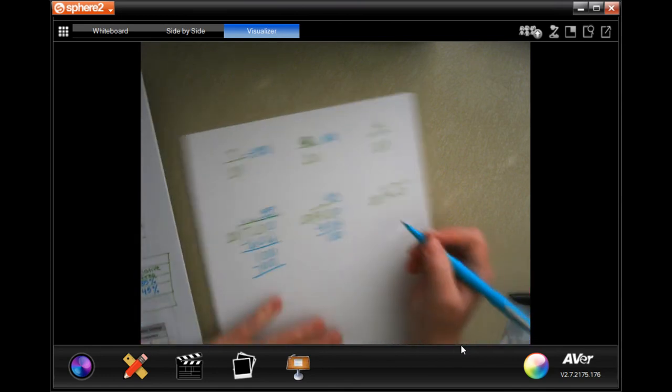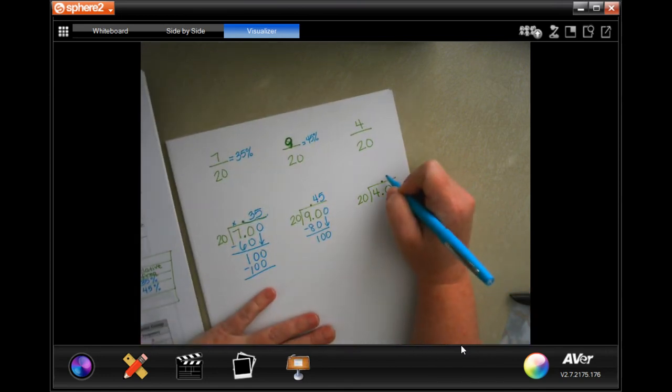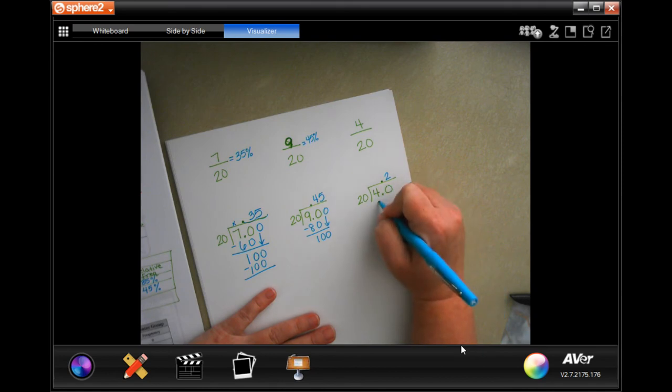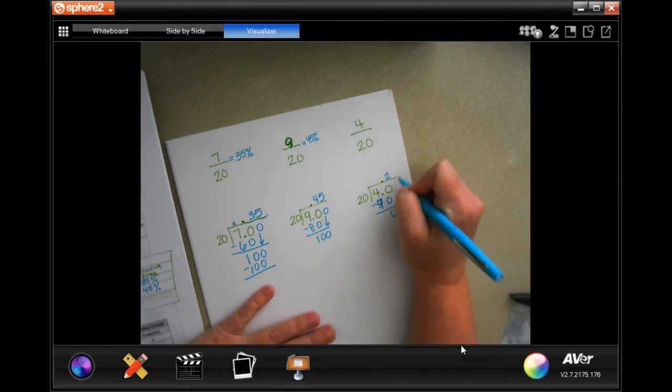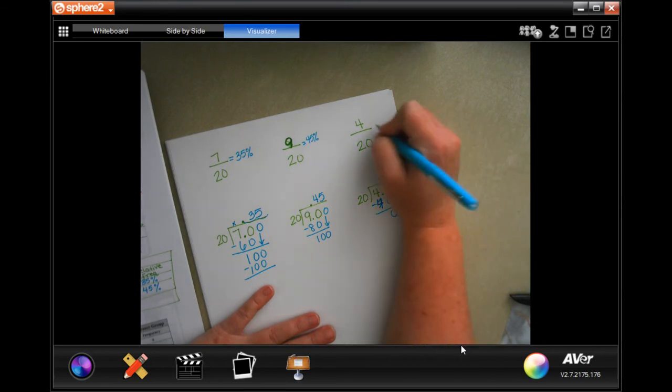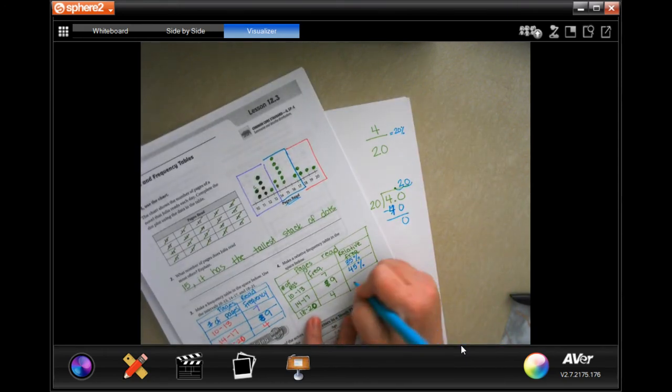Last one, guys. 20 is going to go into 40 two times. Two times 20, sorry, not 20, it's 40. Subtract and we get a zero. Now I need to move that decimal two times, which means I'm just going to add a zero. All right, so now 20 percent.